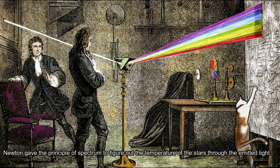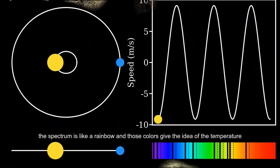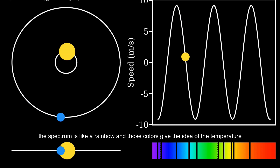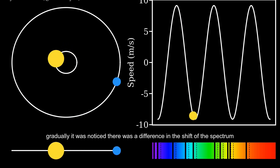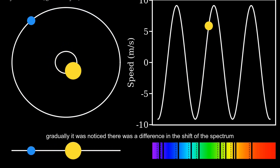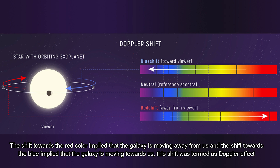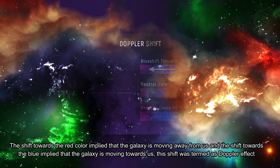Newton gave the principle of spectrum to figure out the temperature of stars through their emitted light. This spectrum is like a rainbow, and those colors give the idea of the temperature. Gradually, it was noticed that there was a difference in the shift of the spectrum. The shift towards the red color implied that the galaxy is moving away from us, and the shift towards blue implied that the galaxy is moving towards us. This shift was termed the Doppler effect.